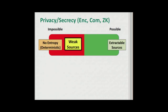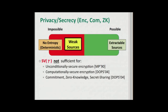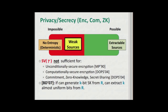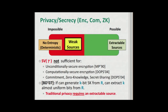However, for privacy the results are much more negative. We know that Santha-Vazirani sources are not sufficient for unconditionally secure encryption. This was later strengthened by Dodis et al. to show they're also not sufficient for computationally secure encryption, commitment, zero-knowledge, and secret sharing. This was again strengthened by Bosley and Dodis, who showed that if you can generate a K-bit secret key from a distribution, then you can extract almost K almost-uniform bits from that distribution. So privacy requires an extractable source.